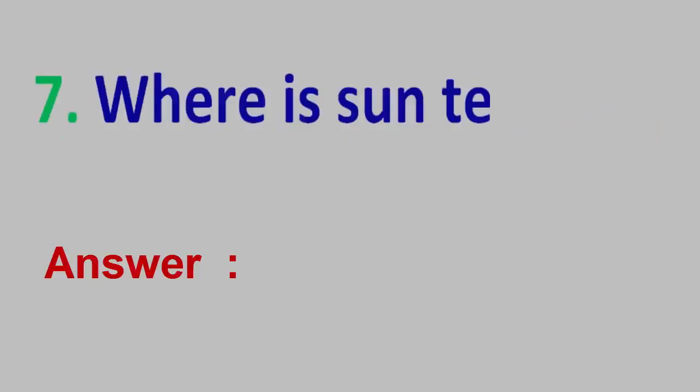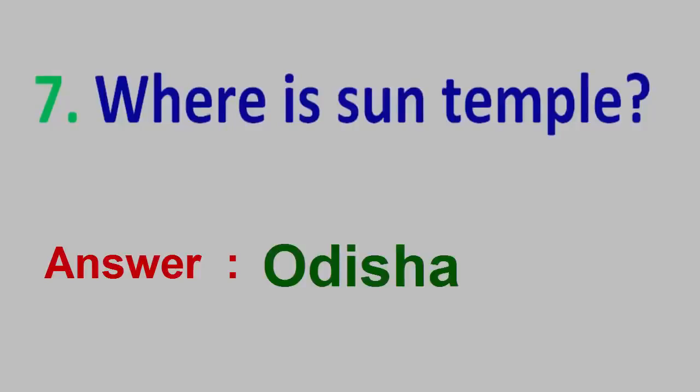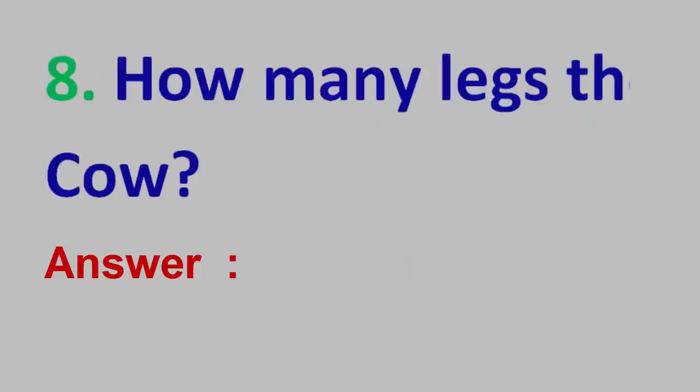Question No. 7: Where is the Sun Temple? Answer: Odisha. Question No. 8: How many legs does a cow have? Answer: 4 legs.